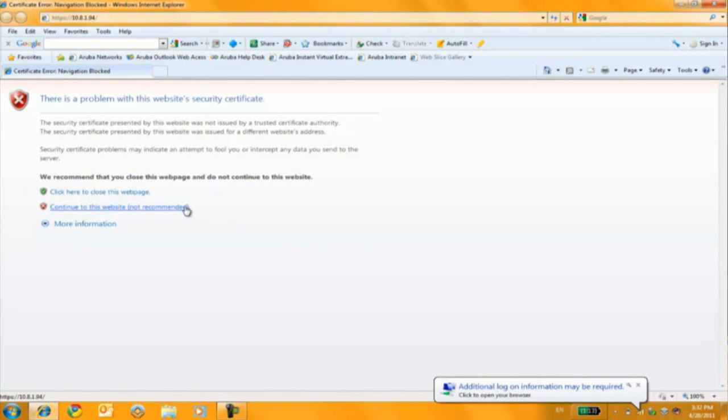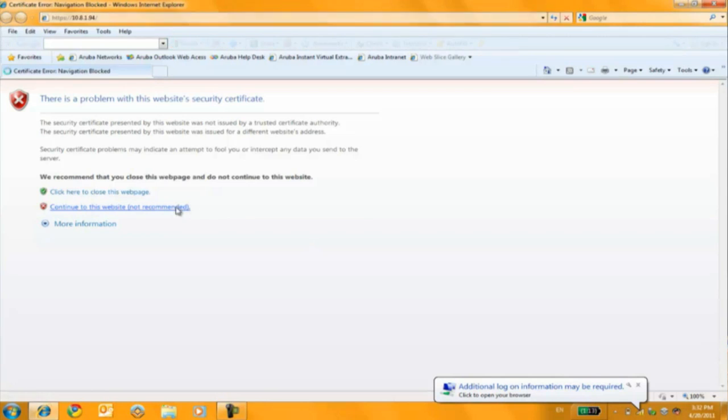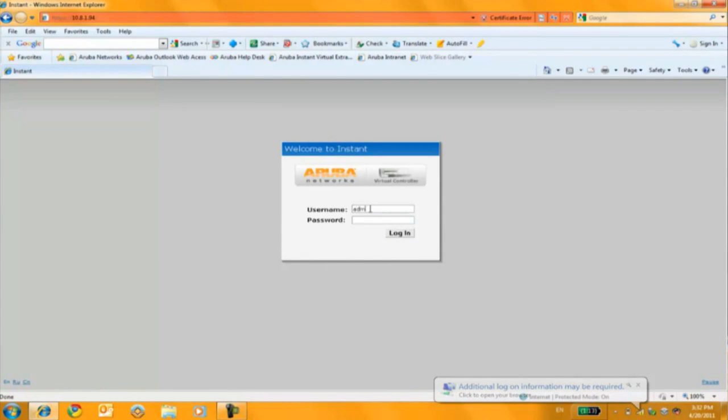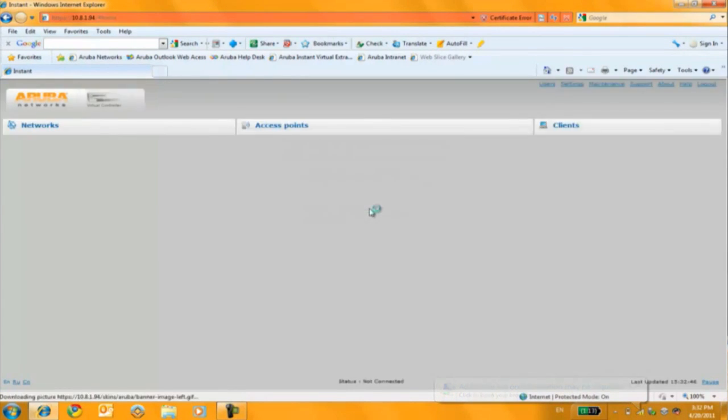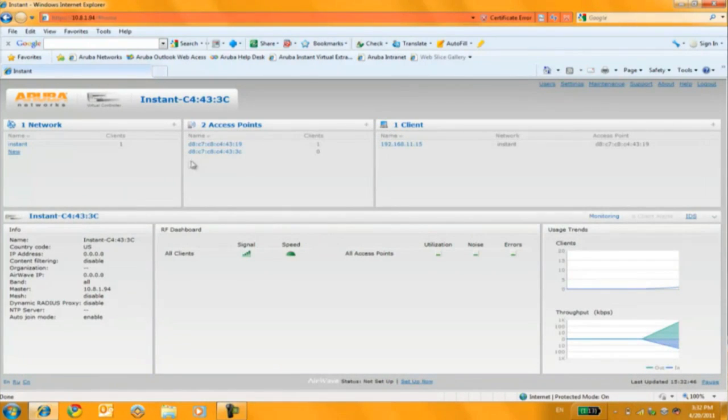I open up a browser and it redirects me to the installation screen. Username password is admin, admin. I see two access points here, but I only connected to one IP address. So that means I've connected to the virtual controller.